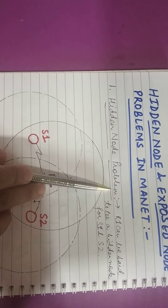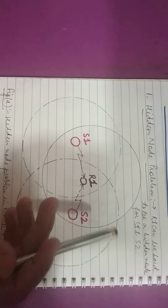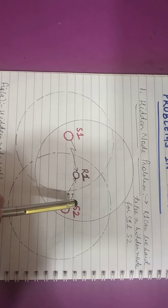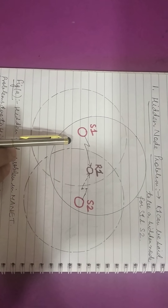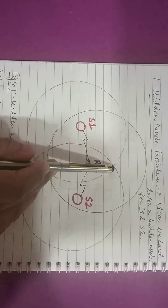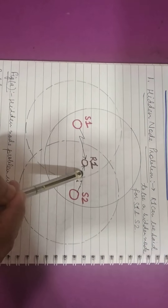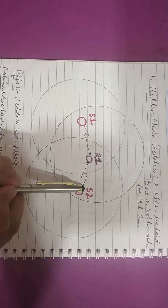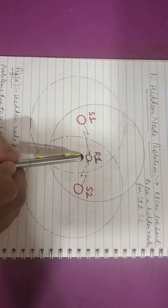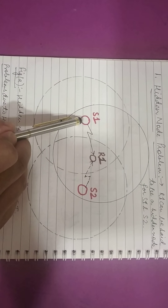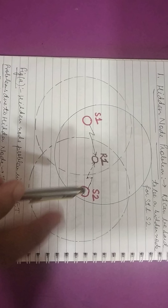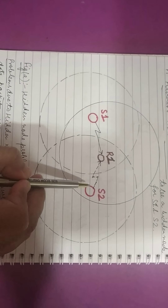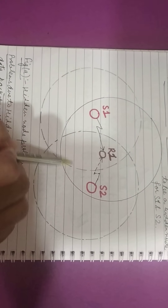To understand the hidden node problem, let us consider a network scenario comprising three mobile nodes: S1, R1, and S2, as shown in this figure. Let us assume that all three nodes are transmitting at the same power. The circles around these nodes depict the radio coverage area. As shown in the figure, node R1 is located in the middle of nodes S1 and S2. Node R1 lies in the radio coverage area of both node S1 and node S2, and can receive transmissions from both.